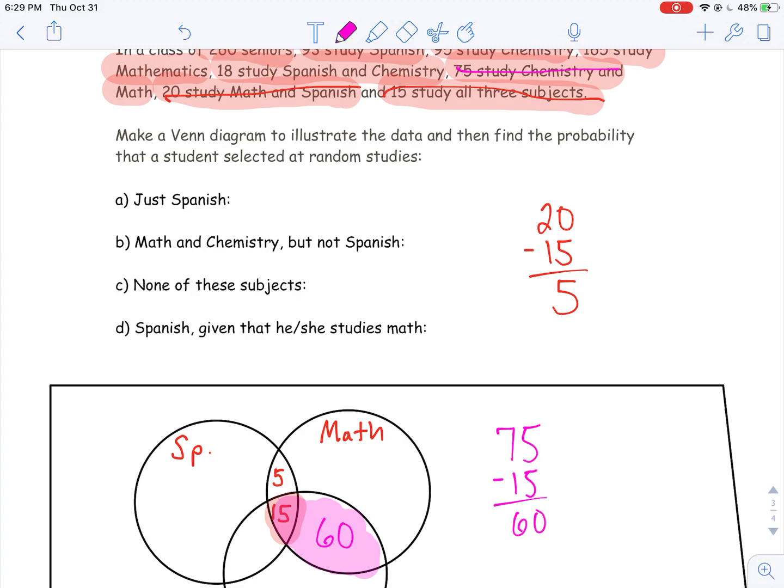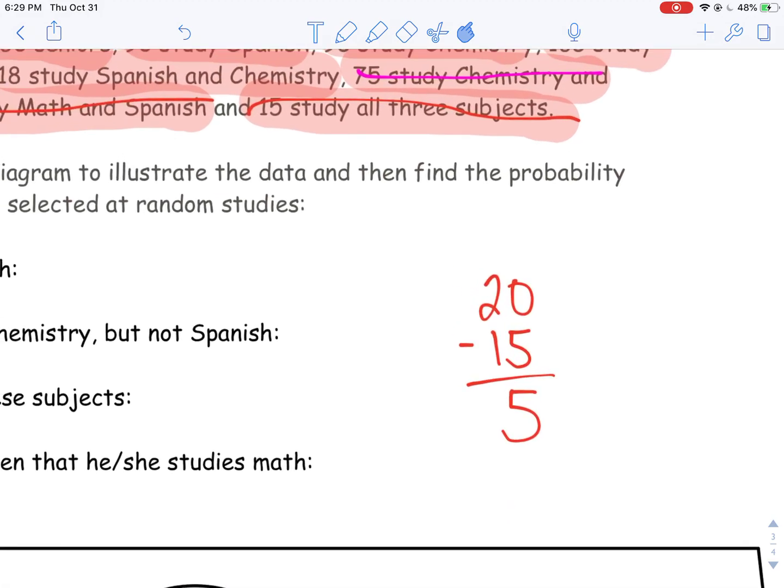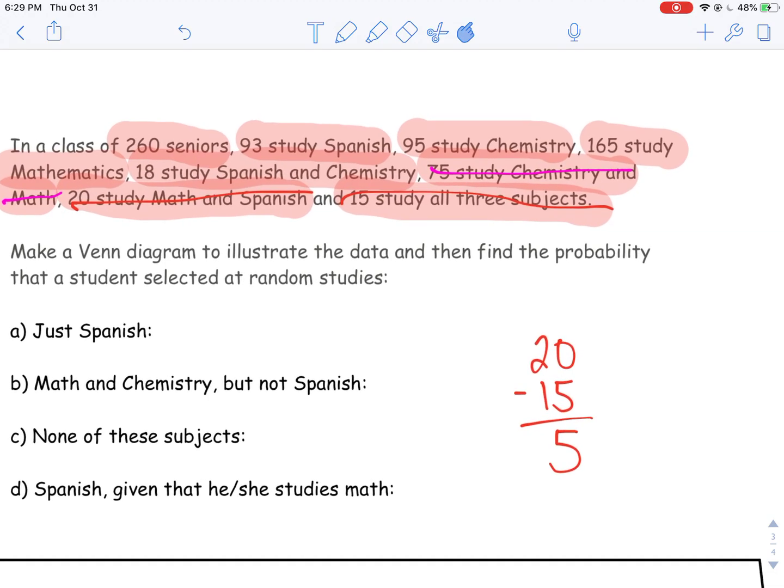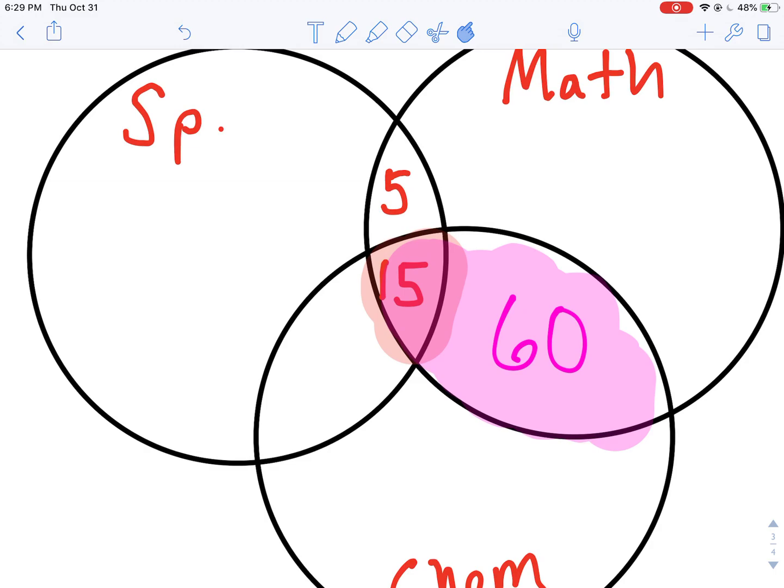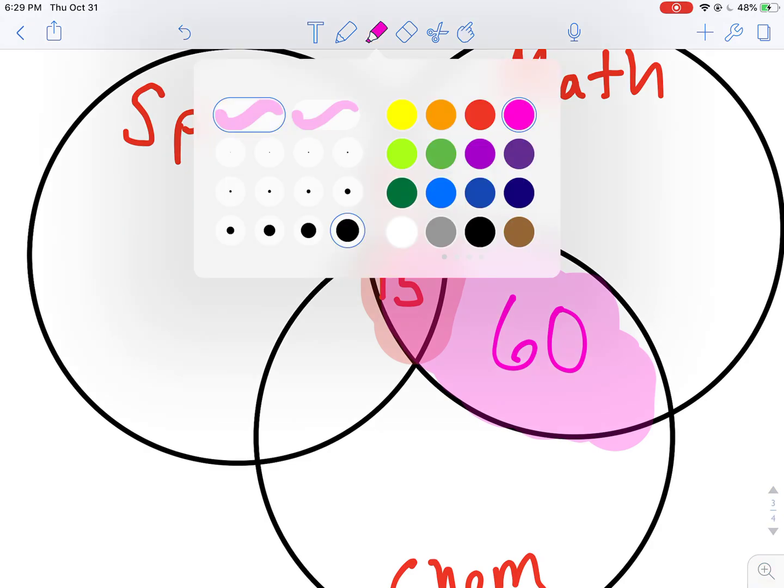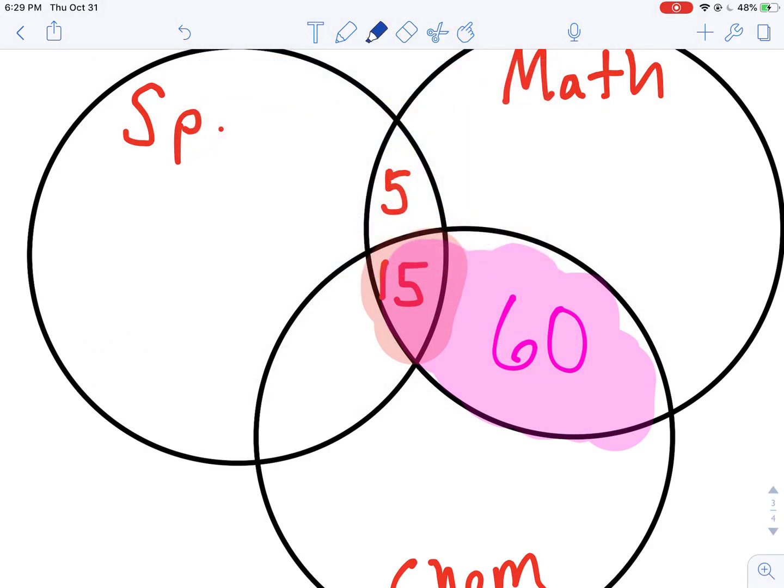The key is, you have to remember, if they're only studying one or only studying two, the word only is going to be used here. So if you don't see only, then you have to assume that it's going to be included in another group, like the 18 here who study Spanish and Chemistry. So I'm going to look for Spanish and Chemistry, and that's going to be right here at this intersection.